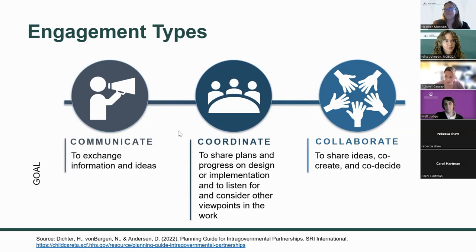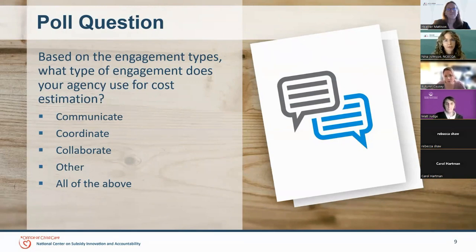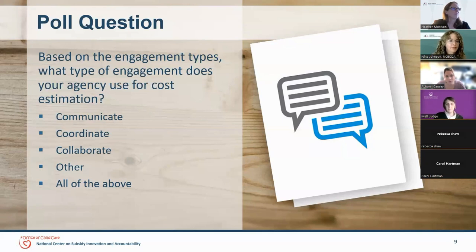We're going to move on to a poll question for you all now. Thinking about the engagement types we just talked about, what type of engagement does your agency use for cost estimation? Do you communicate, do you coordinate, do you collaborate, do you do something else, or do you do all of the above?